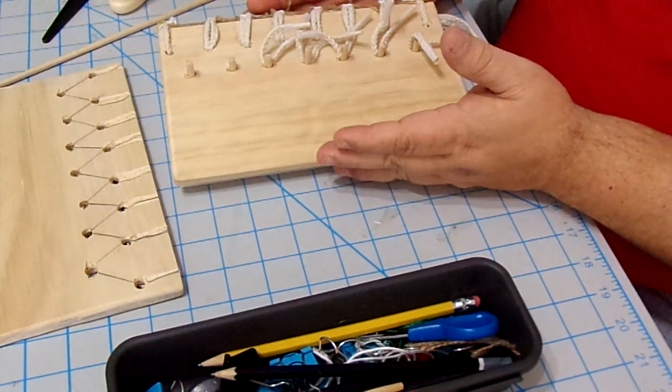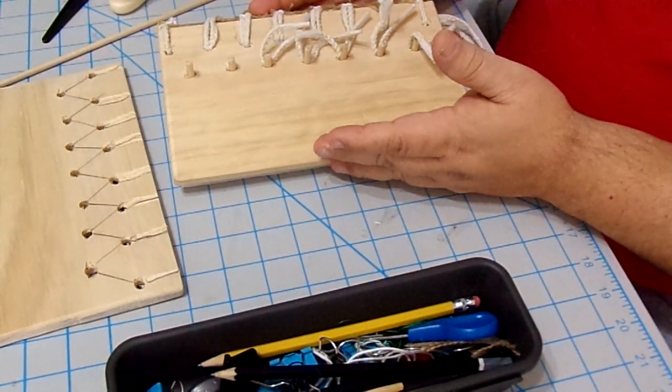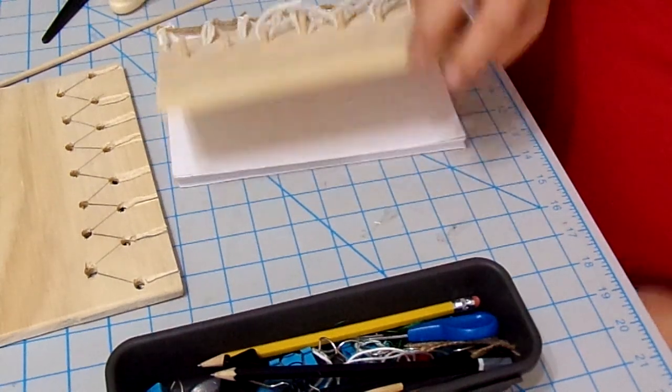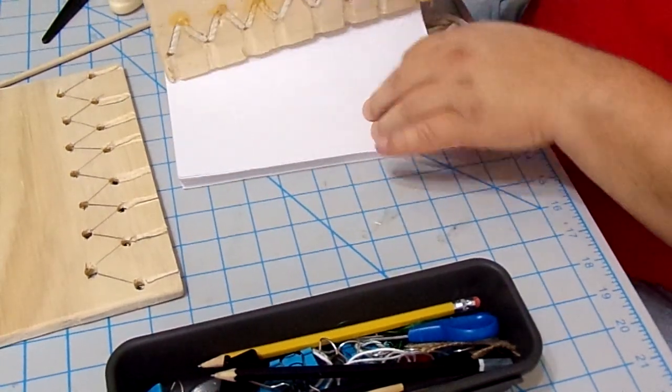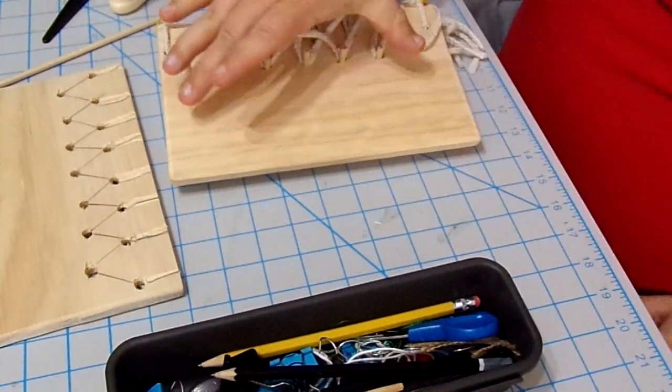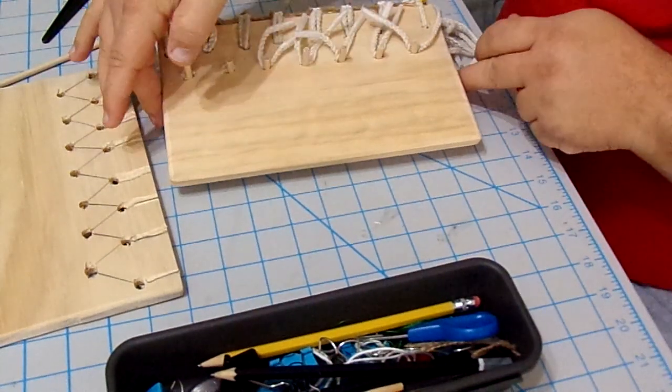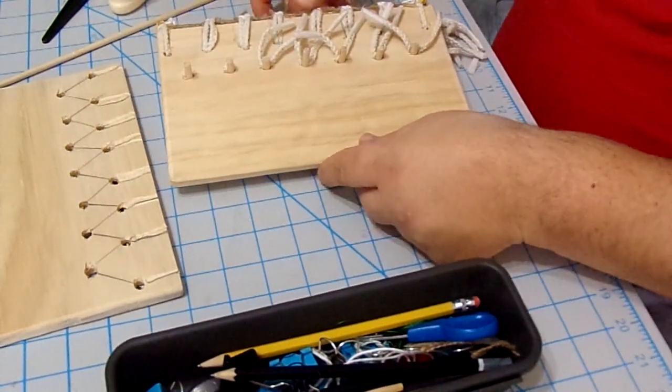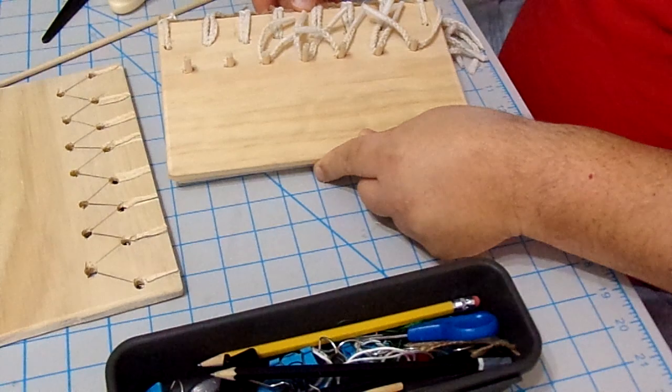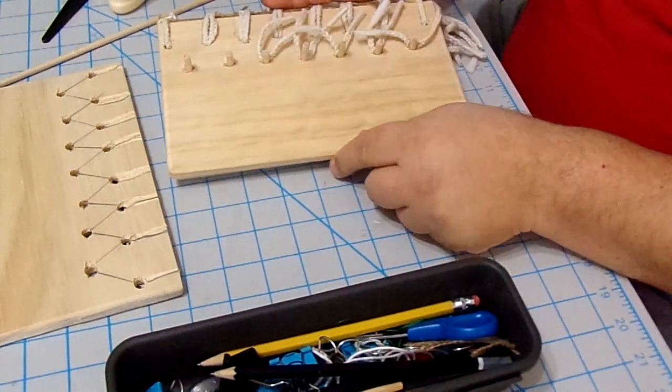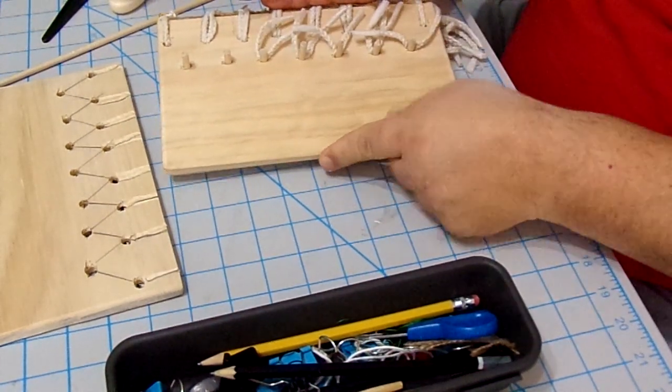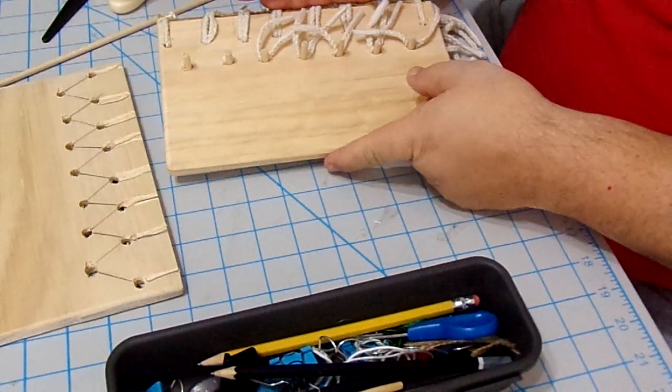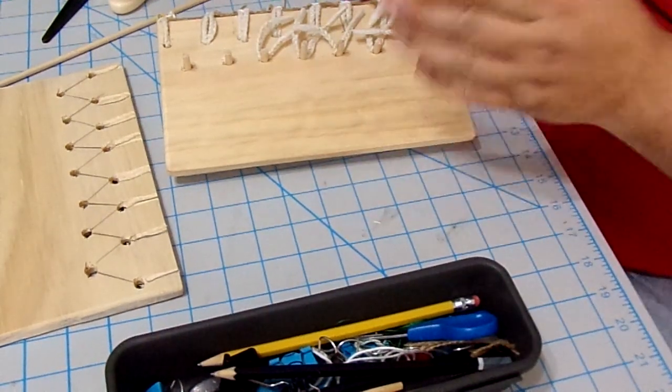So this is an 8 1⁄2 by 5 1⁄2 pages. This is a 9 by 5 1⁄2 because the spine pushes the back of the board forward, which brings this board forward about a quarter inch. So not too bad, not too hard.